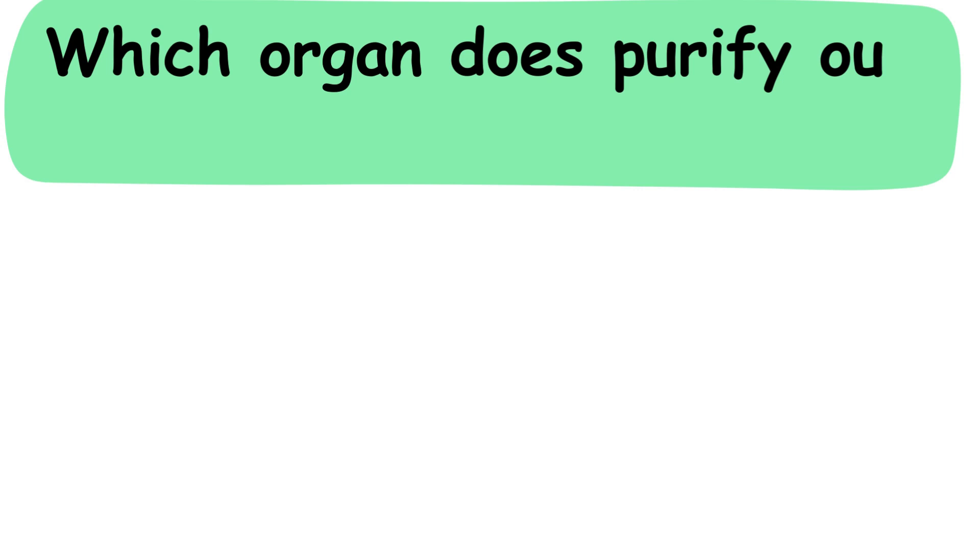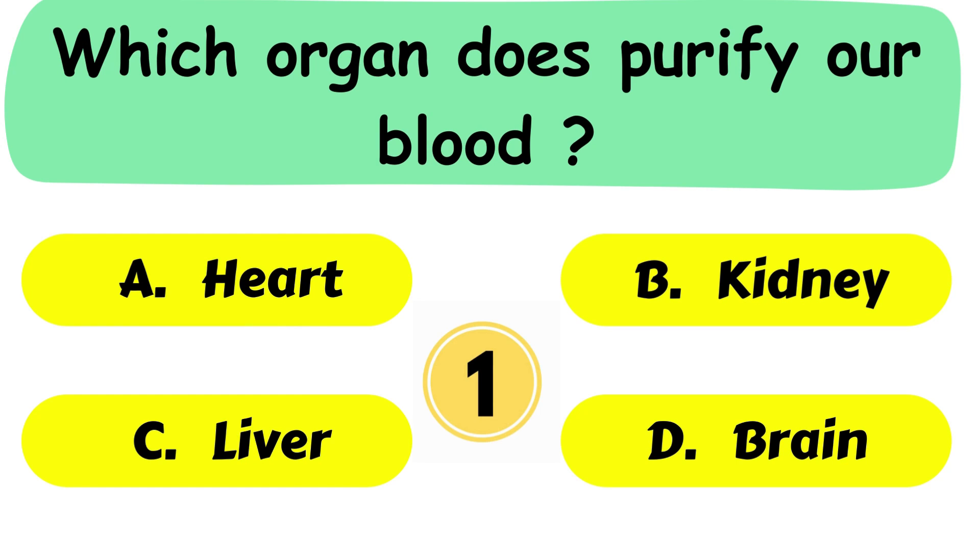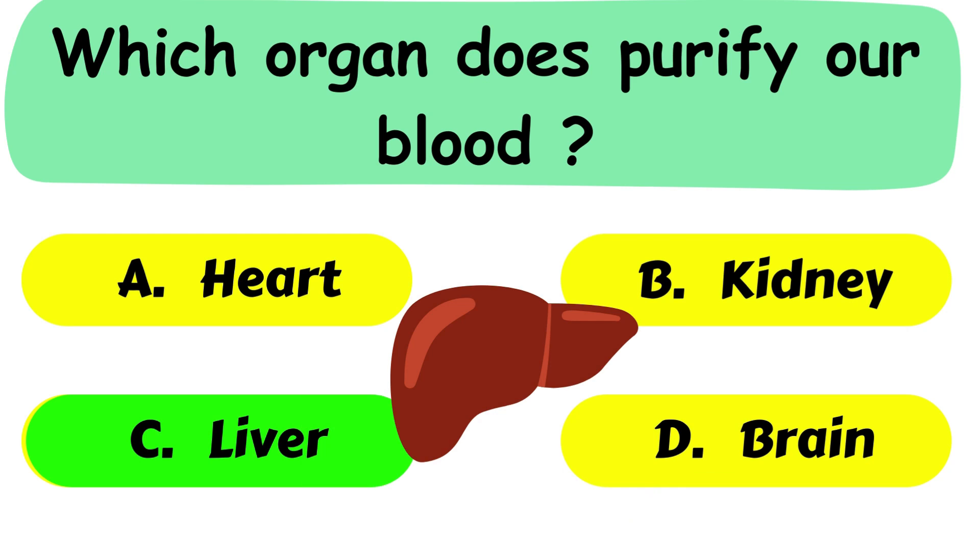Question No. 22. Which organ does purify our blood? A. Heart. B. Kidney. C. Liver or D. Brain. The correct answer is option C. Liver.